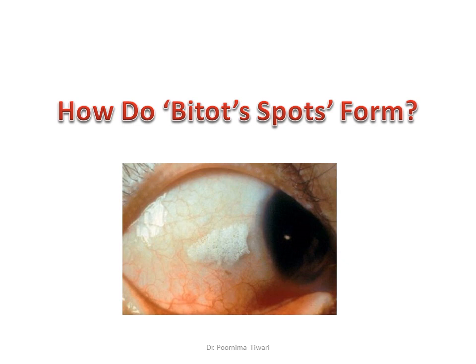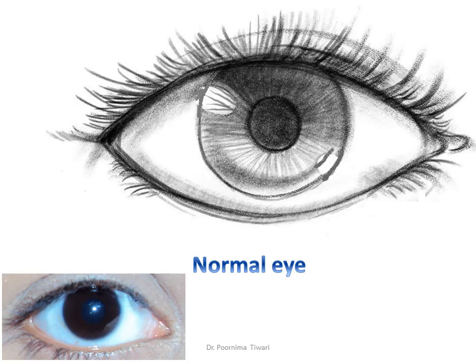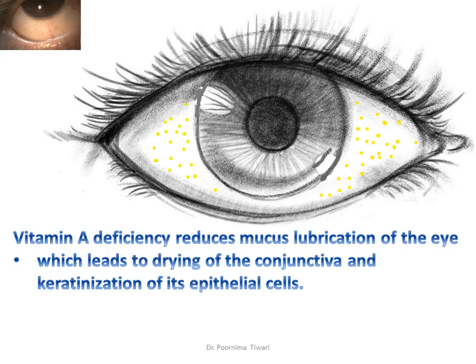Why do Bitot spots form in vitamin A deficiency? This is a normal eye — a normal, glistening, moist eye. In vitamin A deficiency, the cells of the conjunctiva become dry, and these dry and keratinized cells are shed into the conjunctival sac.